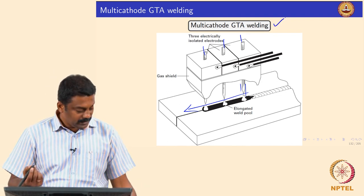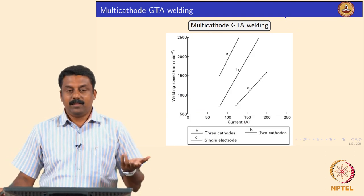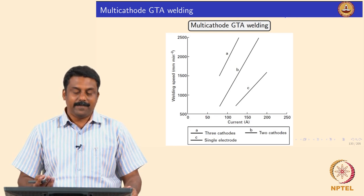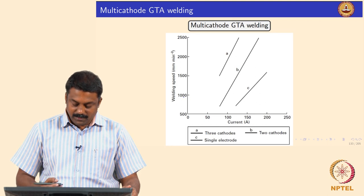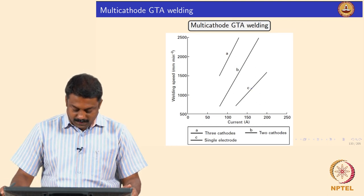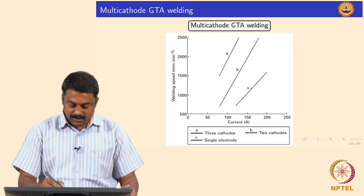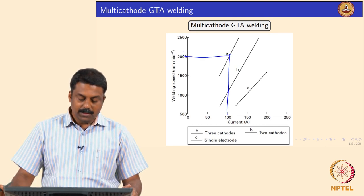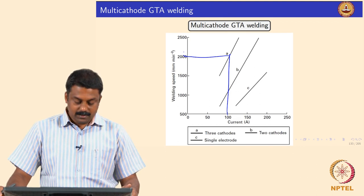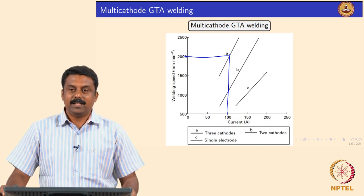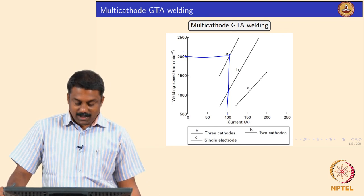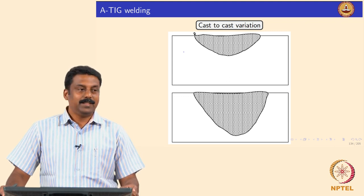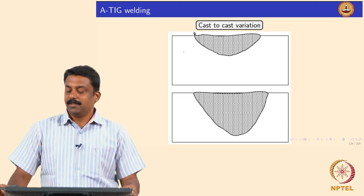Multi-cathode welding increases productivity significantly — obviously you melt more. This graph shows that you can increase the welding speed tremendously by using a multi-cathode. For example, in case A, a three-electrode setup with significantly lower current allows welding at much higher velocities. Because you have more electrodes, you can weld a little bit better. This is a typical product at industrial scale known as ATIG.